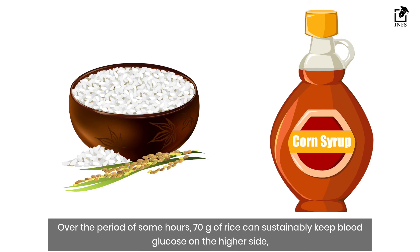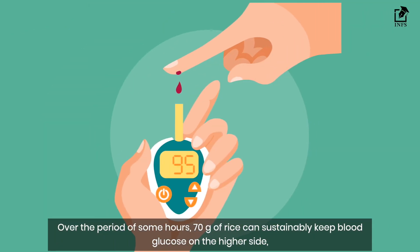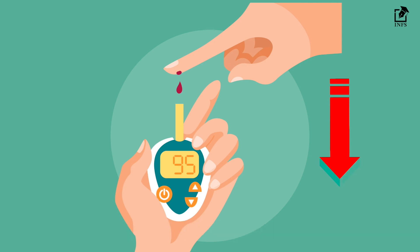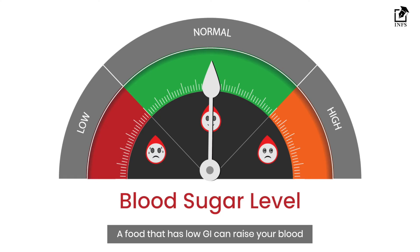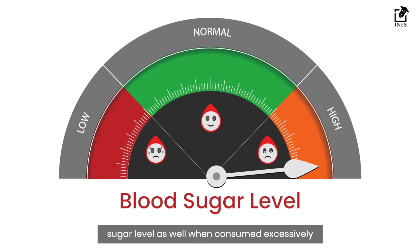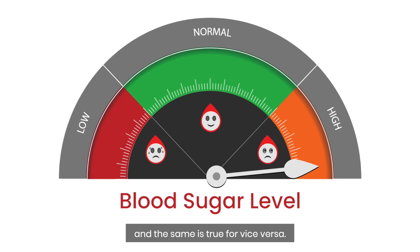Over several hours, 70 grams of rice can sustainably keep blood glucose on the higher side, while 5 grams of corn syrup alone cannot achieve that effect. A food that has a lower GI can still raise your blood sugar level when consumed excessively, and the same is true in reverse. This reinforces why portion size is essential in understanding blood sugar impact.